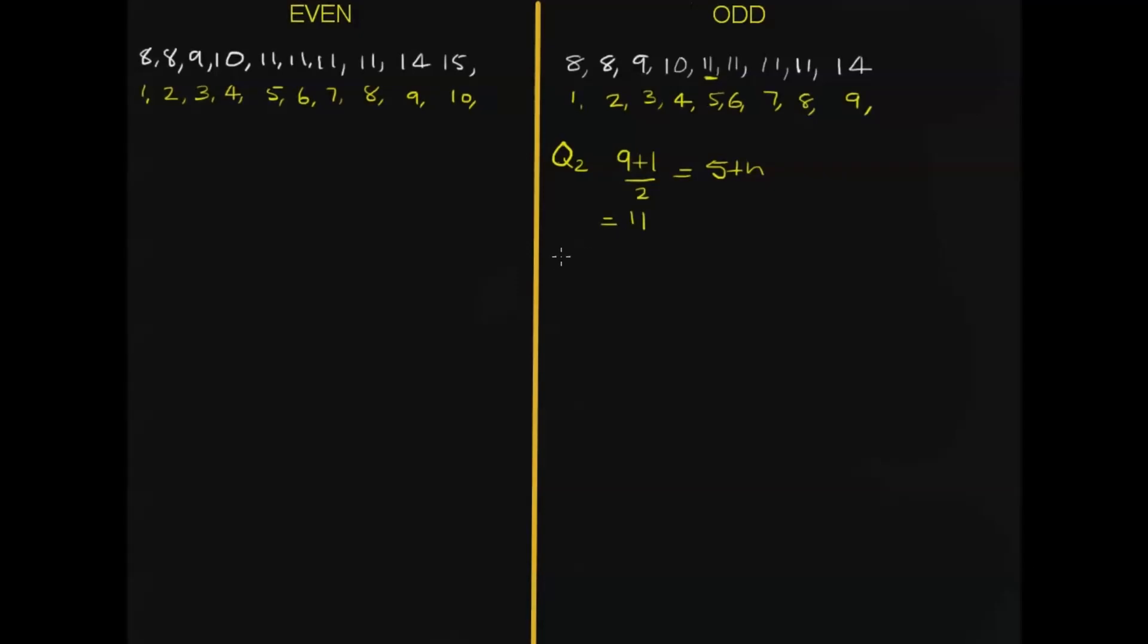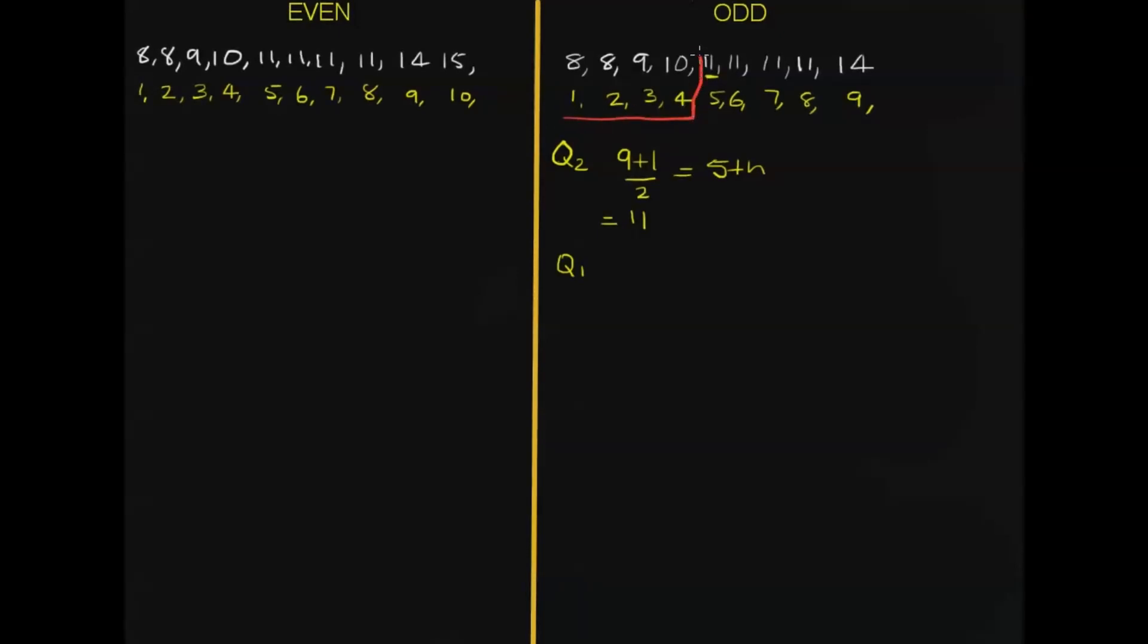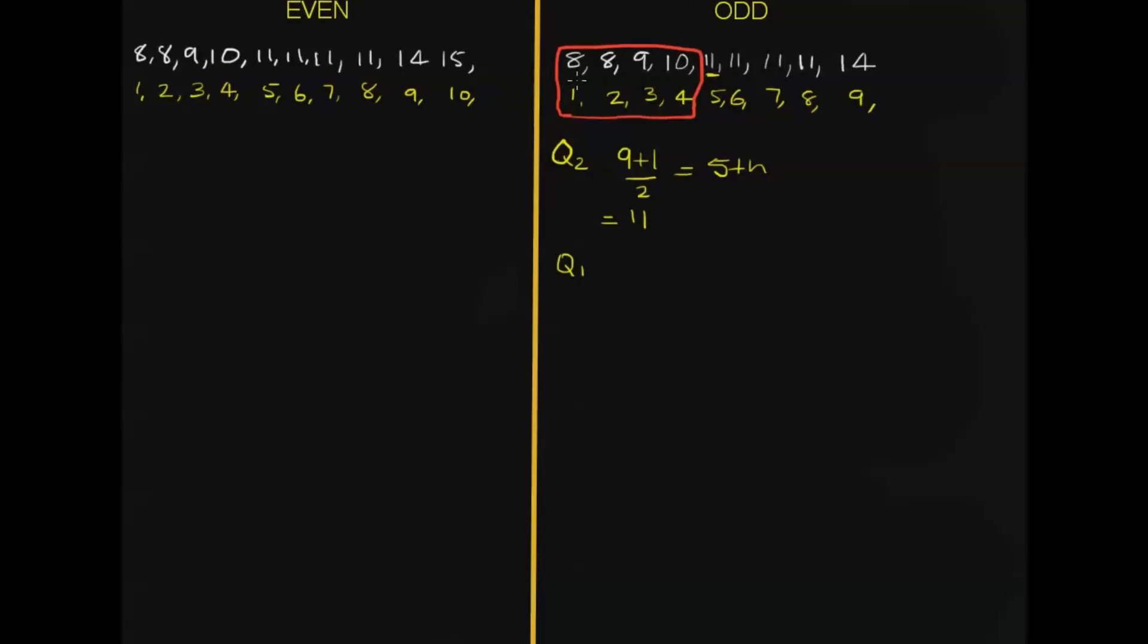Now we're going to find the lower quartile, quartile 1. Now quartile 1 has to lie down here in that set of data there. Notice that we don't include the middle number, we don't include the median when we have an odd set of scores. Now to find the lower quartile, we now notice that we've got an even set of scores.